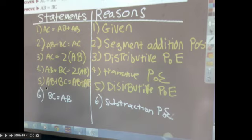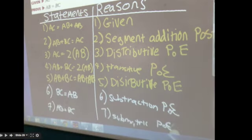Then we subtracted AB from both sides and we got BC equals AB. It was actually AB equals BC, so down here we have AB equals BC. How do we switch it? We use the symmetric POE.